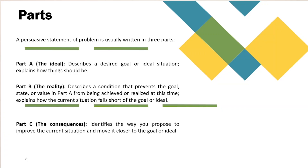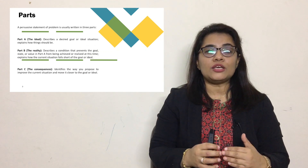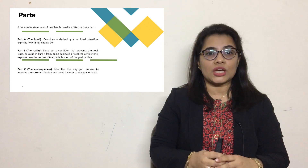The third part is called the consequences. Here you need to identify the way you propose to improve the situation that has shortfalls and move it closer to the goal or the ideal situation. Dear students, here you will mention your proposals to improve the current situation or bring it to the ideal situation. These are the three basic parts of any problem statement you are writing for your thesis or research article.